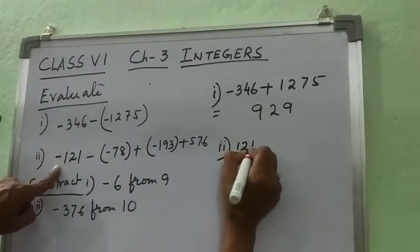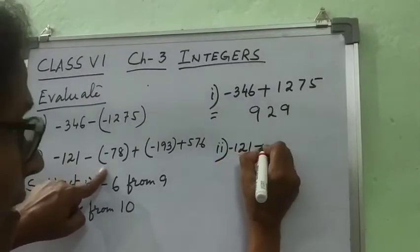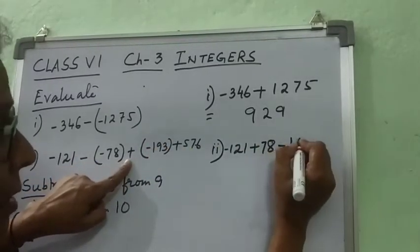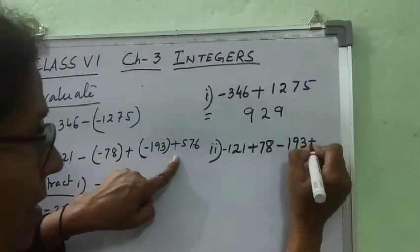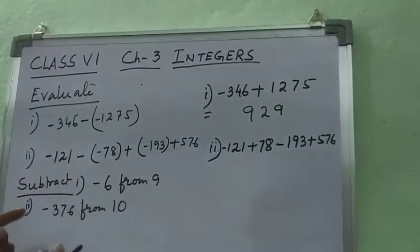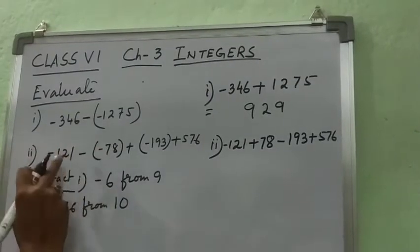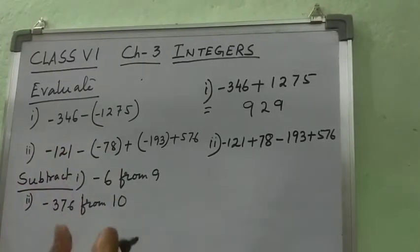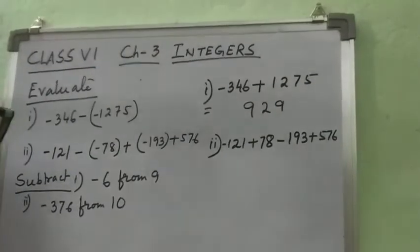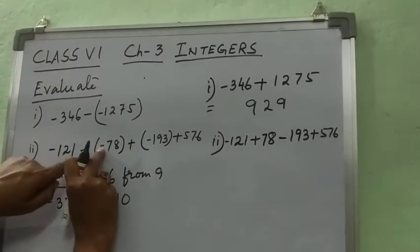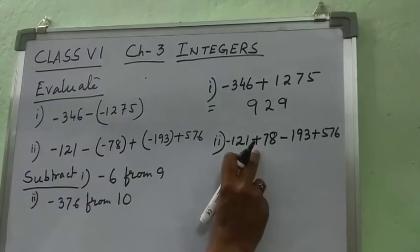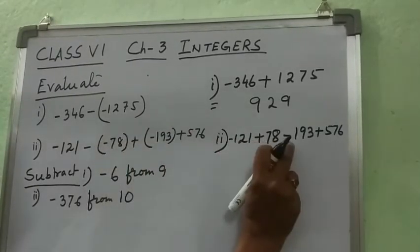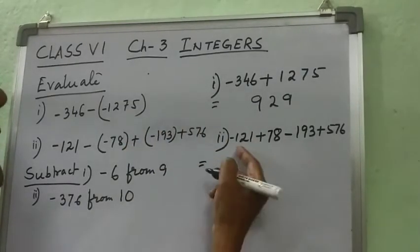Next question: 121 minus 121 minus minus, removing the bracket becomes plus. Then 78 plus, minus minus, removing the bracket gives plus sign, plus 576. Always remember: when outside the bracket there is a negative sign, then when you remove the bracket the sign will change — if positive it becomes negative, if negative it becomes positive. But if outside the bracket there is a positive sign, the sign inside will remain the same and will not change.